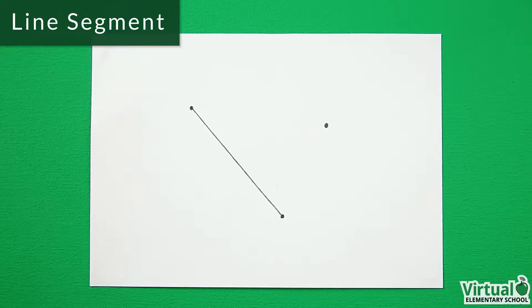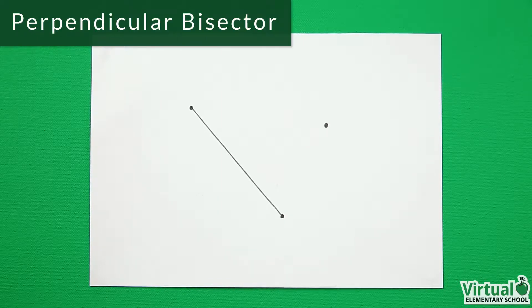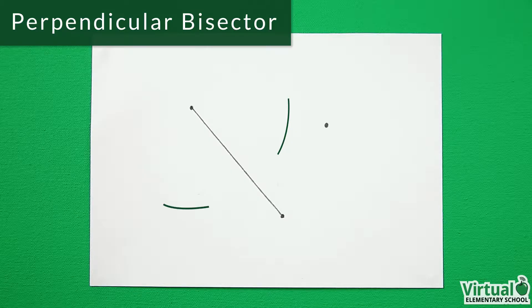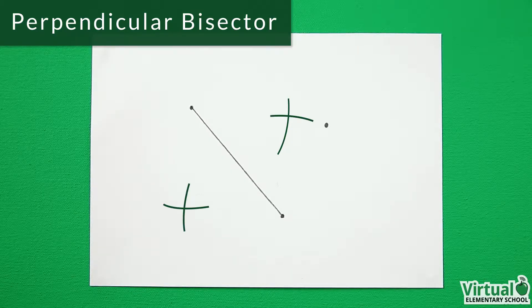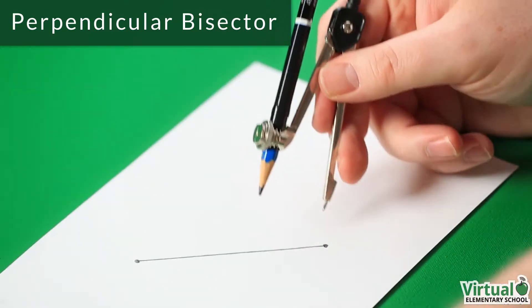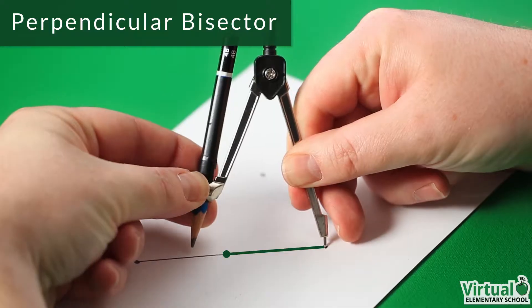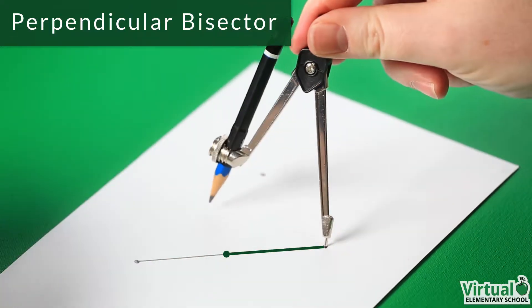Then, we use the compass to construct the perpendicular bisector of this line segment. This is done by making arcs above and below the line segment from both ends of the line segment. The compass must be set at a fixed width that is more than half the length of the line segment.